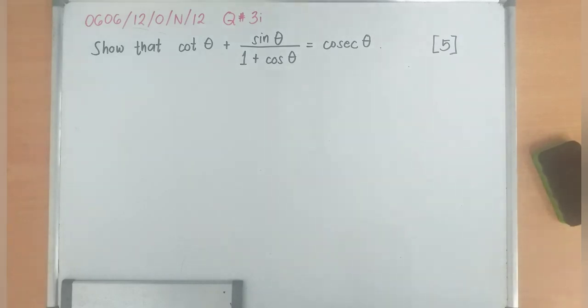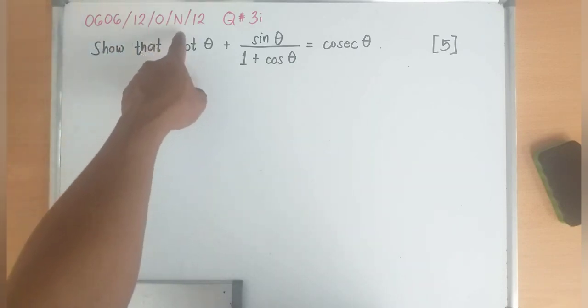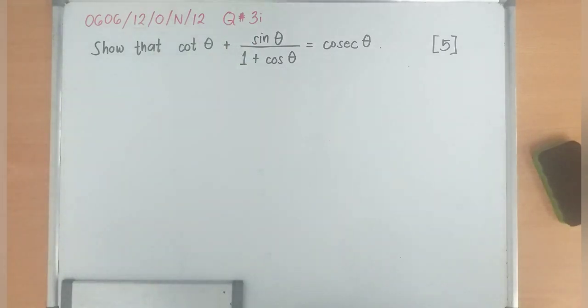We are now going to solve paper 1 variant 2 of additional mathematics paper of IGCSE October, November 2012 question 3 letter I or the first question. It is equivalent to 5 marks.